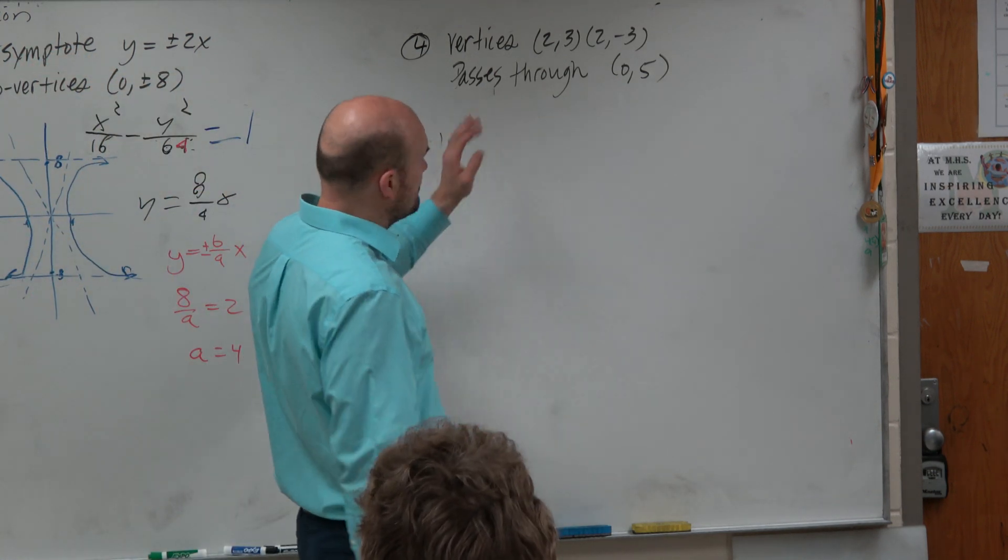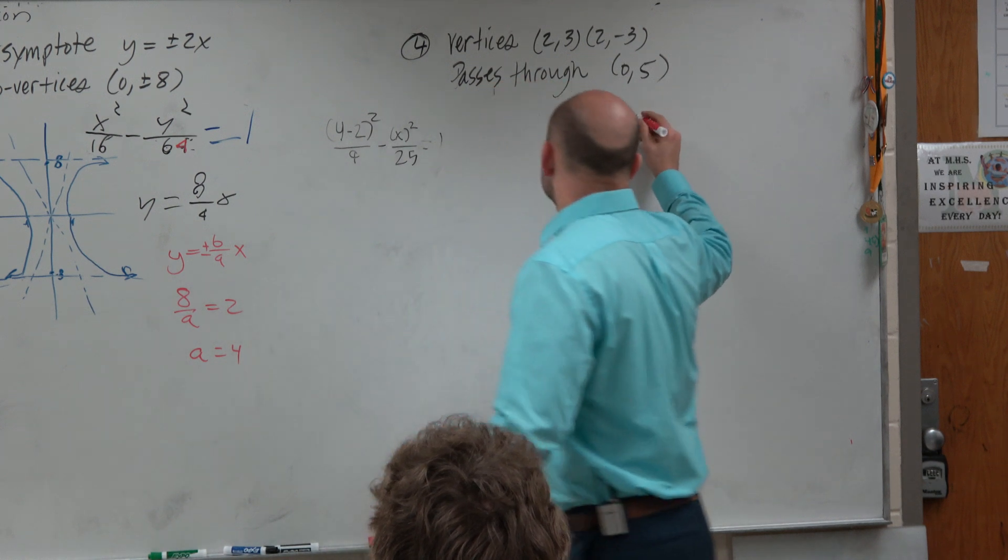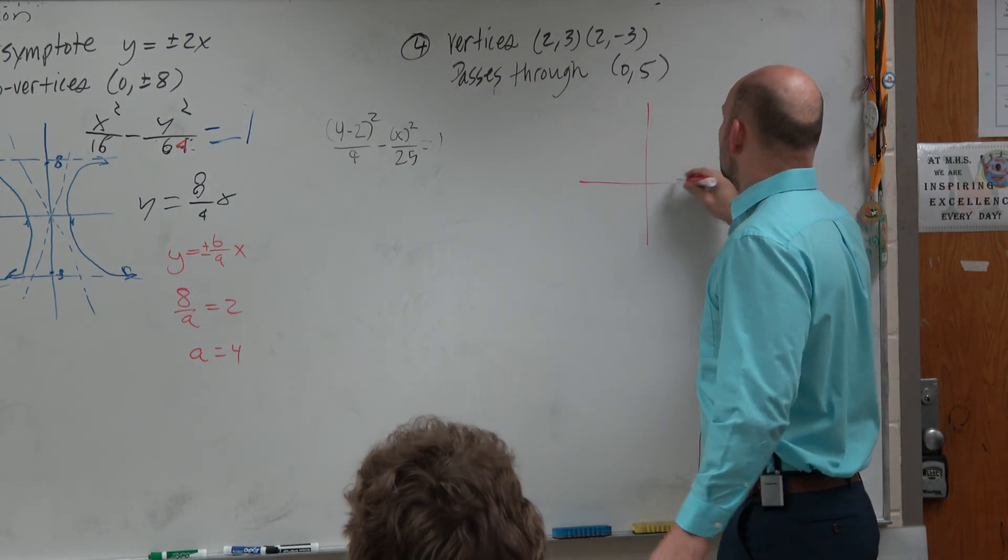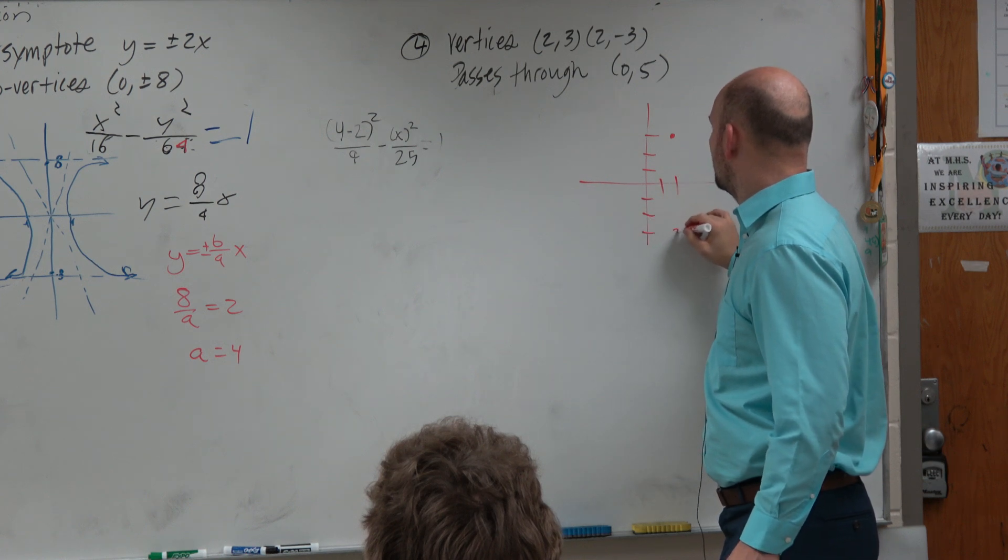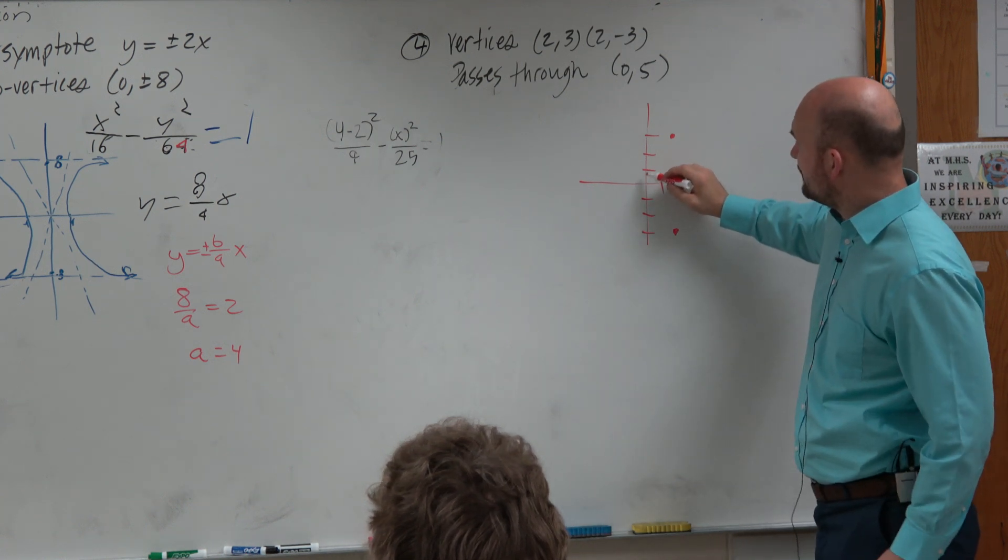So in this example, guys, first thing we want to do is plot the point. So we have two points, our vertices. So 1, 2, up 2, 3, and over 2, down 3. And then also pass the point 0, 5.